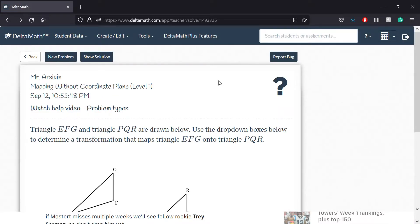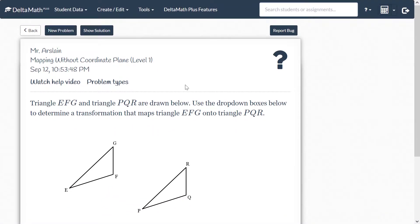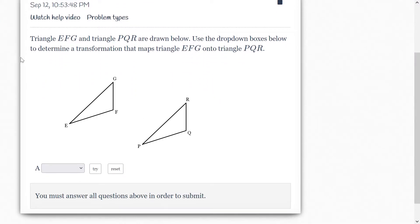In this video we're going to take a look at Delta Math's mapping without the coordinate plane, and this is just level one. Let's walk through what you might run into in this part of the Delta Math. You have in this case two different triangles, and really what they want you to do is to identify the different types of transformations.